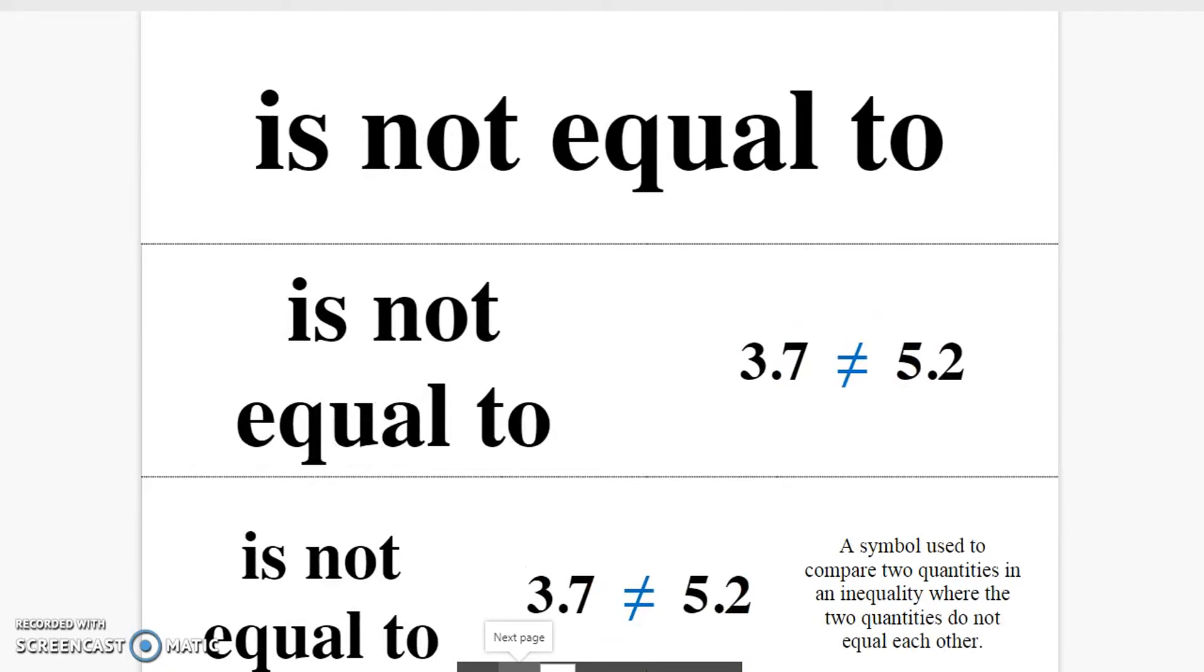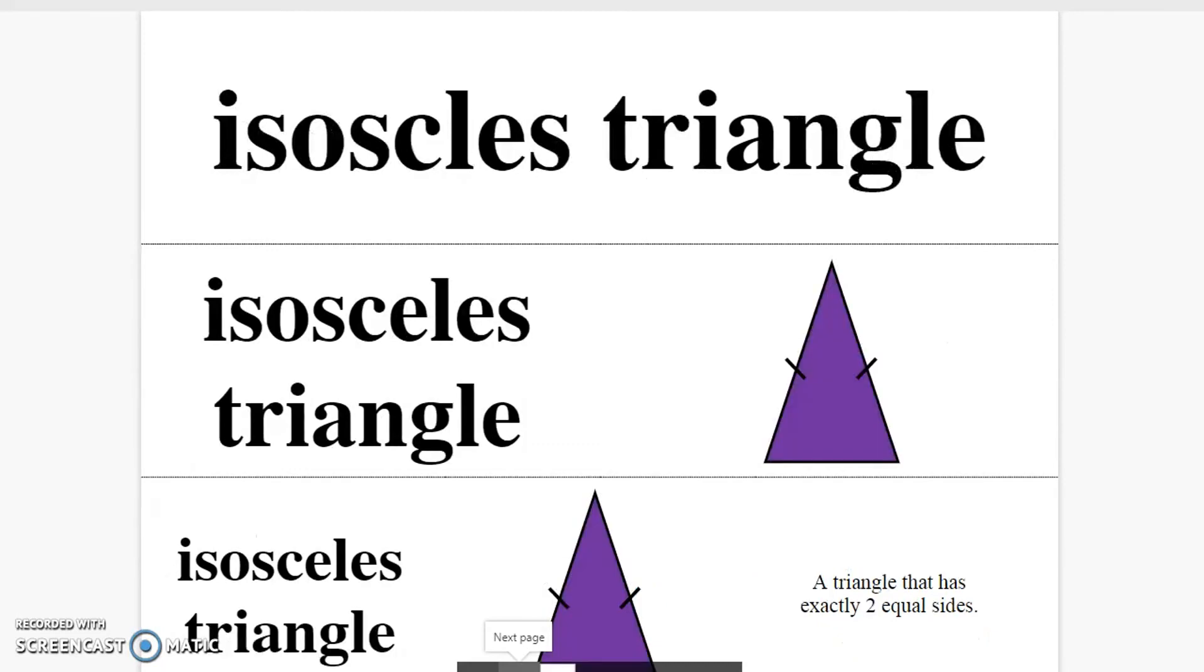Is not equal to. A symbol used to compare two quantities in an inequality where the two quantities do not equal each other. Isosceles triangle. A triangle that has exactly two equal sides.